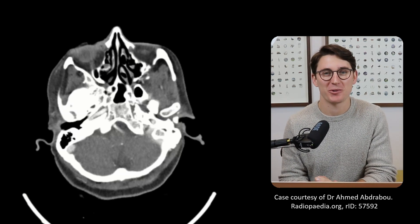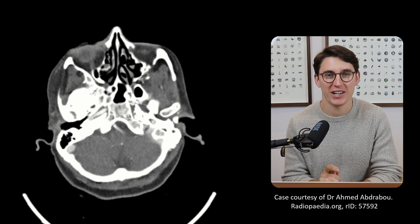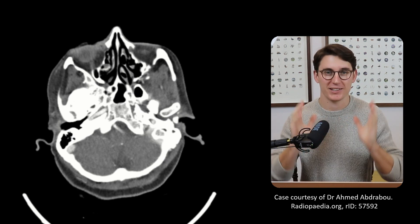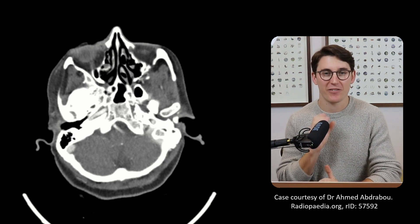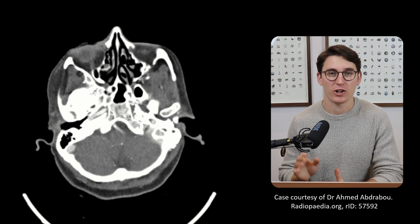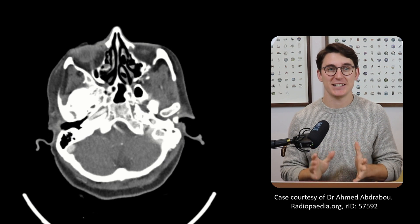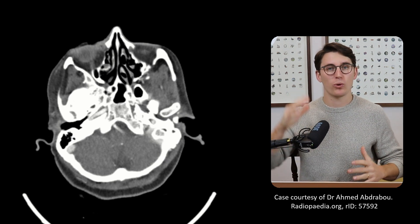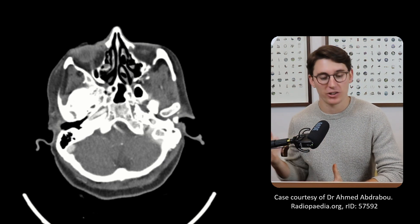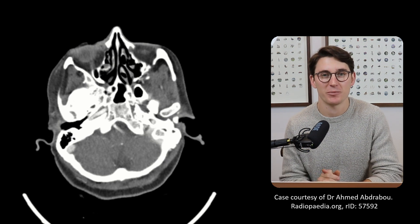Hello everybody, welcome back. I hope you're all doing well. Today we're going to have a look at the anatomy of the internal carotid artery. We're going to follow its course all the way through the neck, through the skull base, and into the cerebrum. Then we're going to have a closer look at the artery itself, define the various segments, and look at the branches that come off each of those segments. I'm going to start with a CT scan for a broad overview of how the carotid runs up into the circle of Willis, and then go on to an MR angiogram where we can look at the anatomy in much more detail.